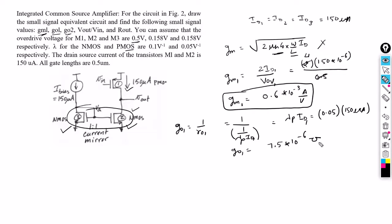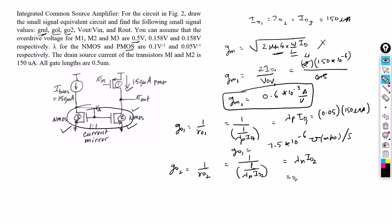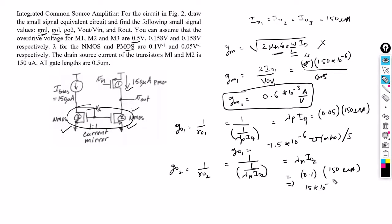This unit is called mho or simply Siemens (S). Similarly, G02 = 1/RO2. The second transistor is NMOS, so we use λN instead of λP. G02 = λN · ID2 = 0.1 × 150µA = 15 × 10⁻⁶ Siemens. These are the answers for G01 and G02.